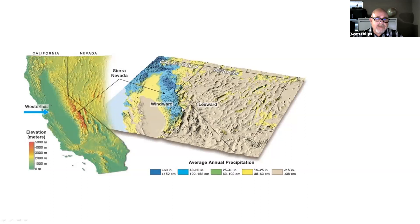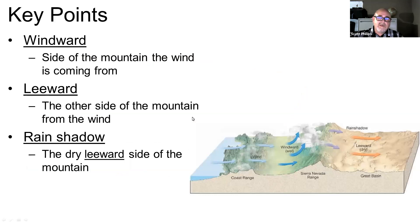Looking at California and the Sierra Nevada: the windward side, because of the westerlies coming in, is quite wet — like Yosemite National Park. But on the other side, in Nevada and parts of the California desert, you're on the leeward side where the air is moving downward and it's quite dry. The windward side is the side of the mountain the wind is coming from. In the case of the Sierra Nevada, winds come from the Pacific Ocean and blow up the windward side, then down the leeward side. Another term for the leeward side is the rain shadow — the dry leeward side of the mountain range.